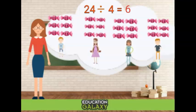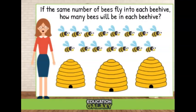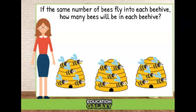Let's try some practice problems. If the same number of bees fly into each beehive, how many bees will be in each beehive? Let's split up each bee into a beehive. We want to make sure we're splitting them up evenly. The division problem would look like 15 divided by 3. That equals 5 since there are 5 bees in each beehive. Let's try another.